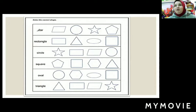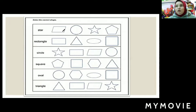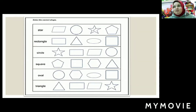KG1, color the correct shape. What's this word? Star. So where's the star shape here? This one is a star? No. This one? No. This one? Yes. So I will color it with the red color.